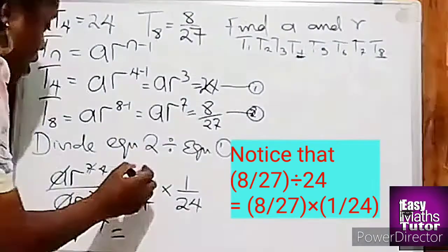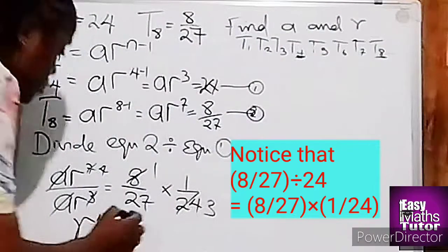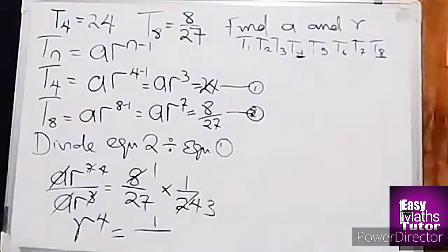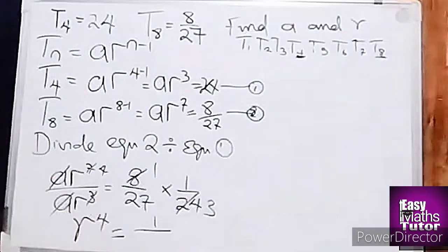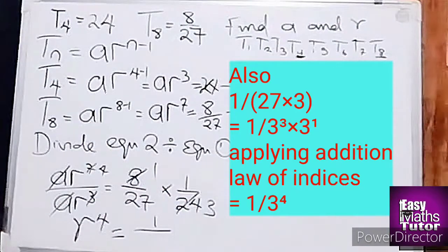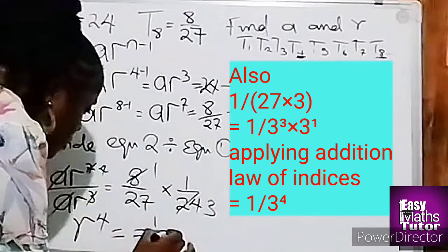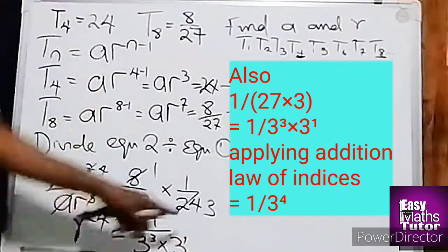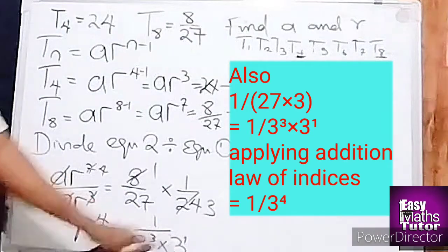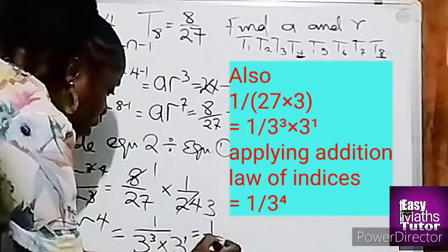Now let's shift to this other side. So we'll have 8 go here 1, 8 go here 3 times, leaving us with 1 over 27 times 3. And we know that 27 is 3 raised to power 3 times 3. If you apply the law of indices, this is 3³ times 3¹. So if you multiply the same base, this means you have to add the powers, giving us 1 over 3⁴.